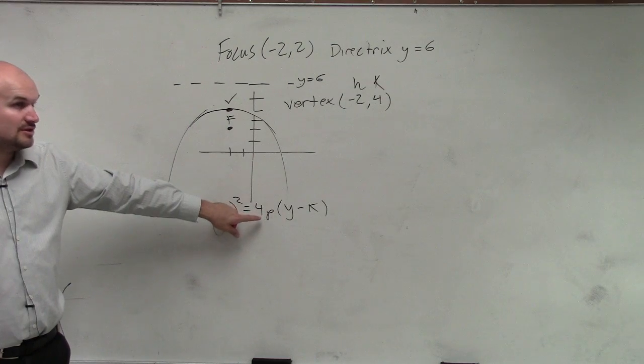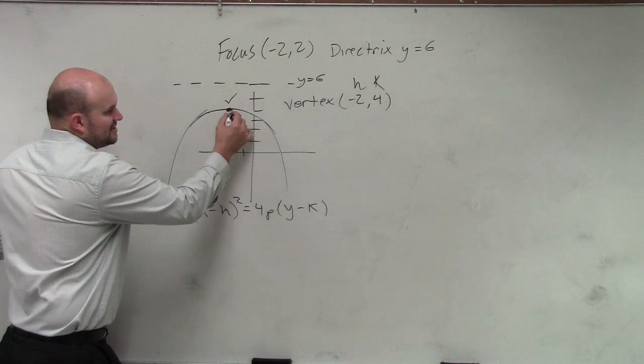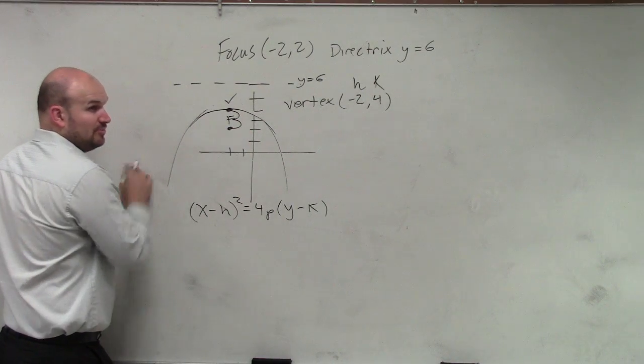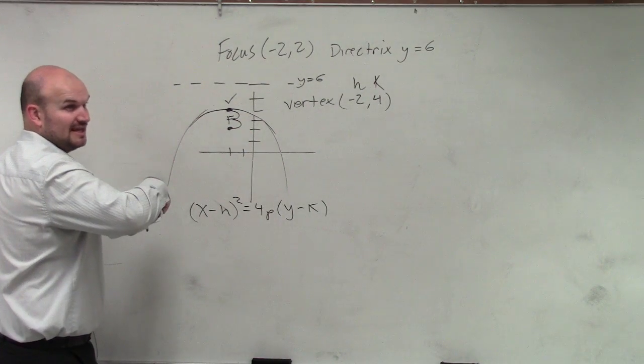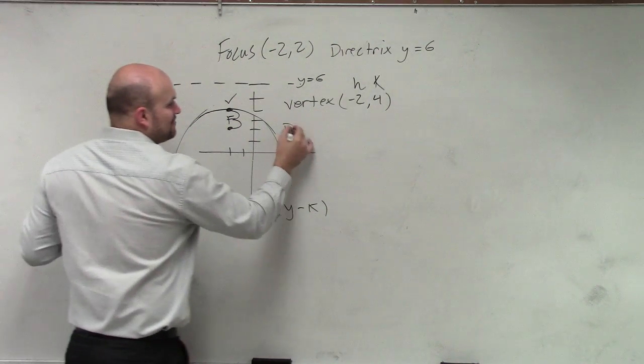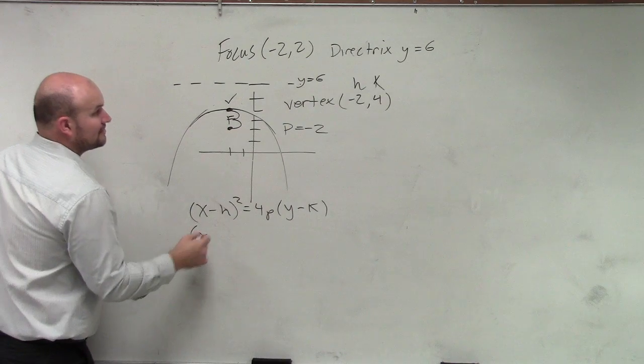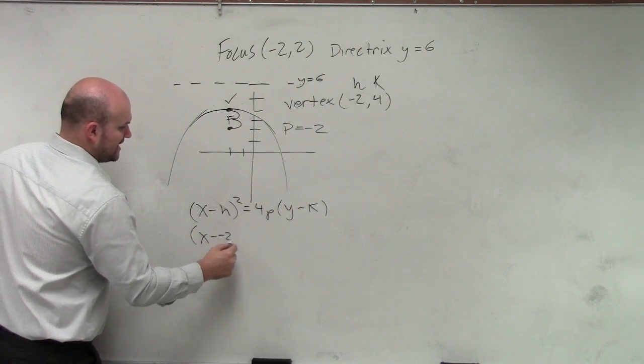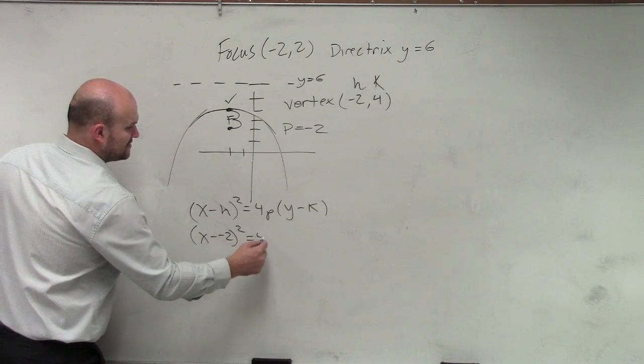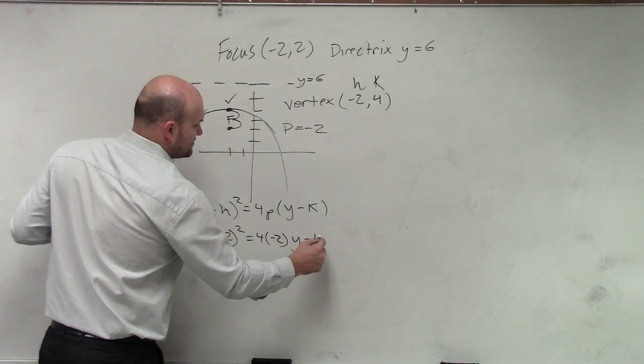And then we need to figure out P. So P is the distance from our vertex to our focus, which is how far? 2, but it's going down. So therefore, it's in the positive or negative direction? Negative direction. So you'd say P is equal to negative 2. So X minus a negative 2 squared equals 4 times negative 2 times Y minus 4.